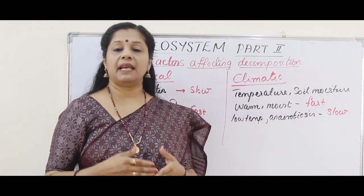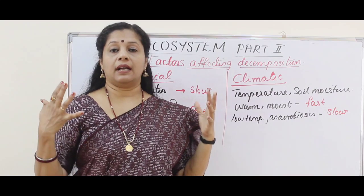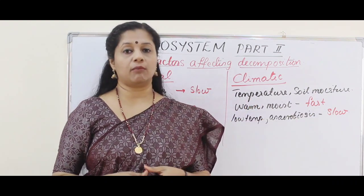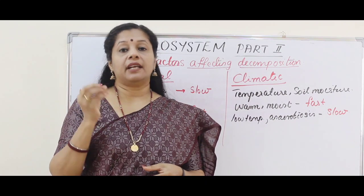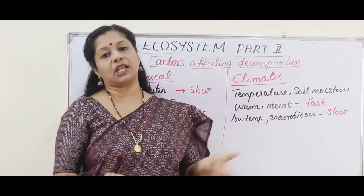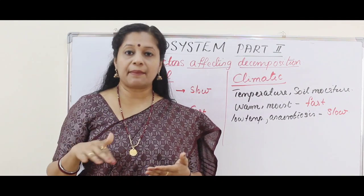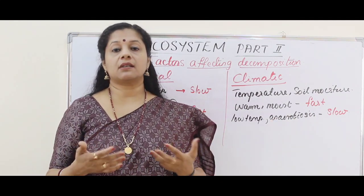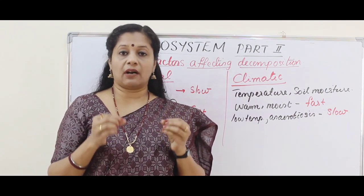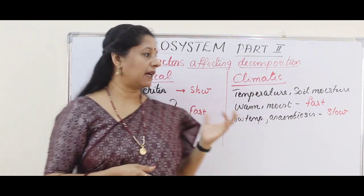The second factor is climatic conditions. The main decomposers — aerobic bacteria and fungi — need a lot of oxygen, so an aerobic environment is necessary. The two key climatic factors are temperature and soil moisture. Warm and humid conditions favor faster decomposition. If temperature is very low, enzymatic activity slows down. Similarly, under anaerobic conditions, organisms cannot get enough oxygen, leading to buildup of organic material and slower decomposition.